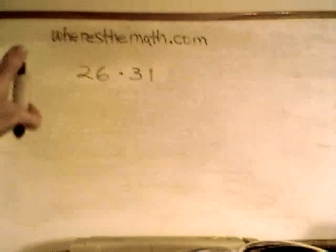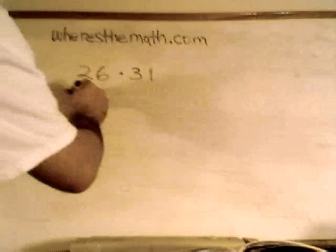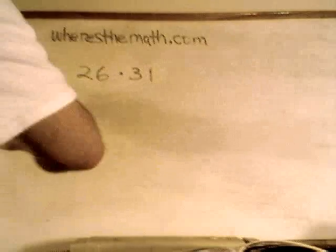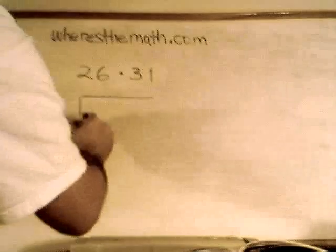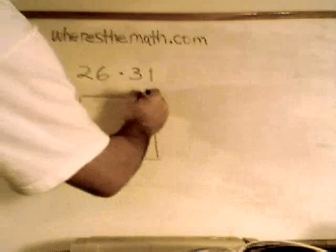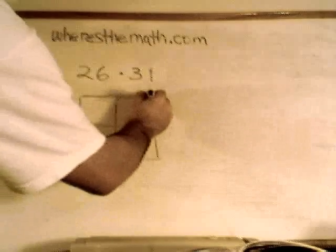The next method we're going to look at is called the Lattice Method. Let me start my timer. The Lattice Method has us drawing this stupid square, which makes me feel like an idiot.